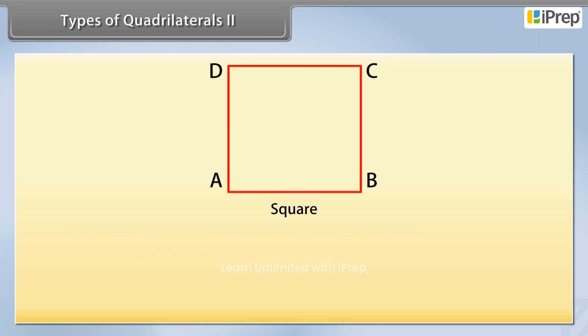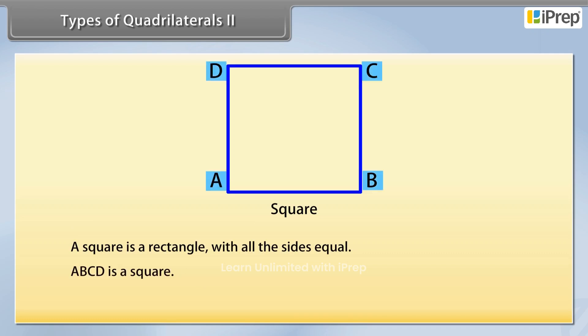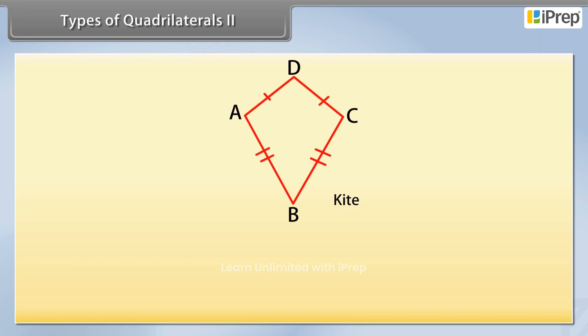Look at this figure now. This is a square. A square is a rectangle with all sides equal. ABCD is a square. The last one is kite.